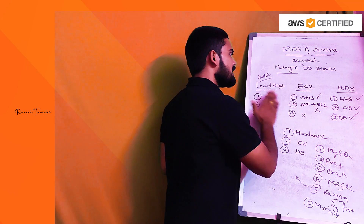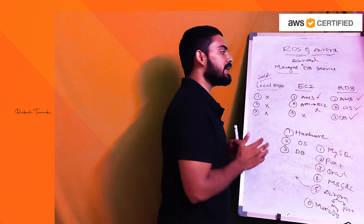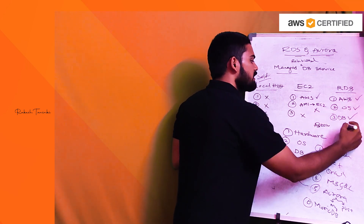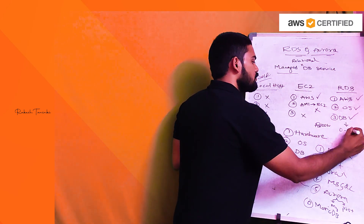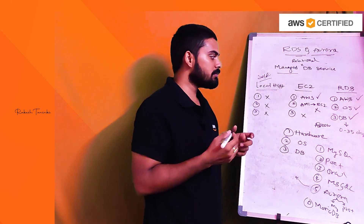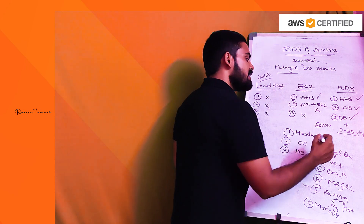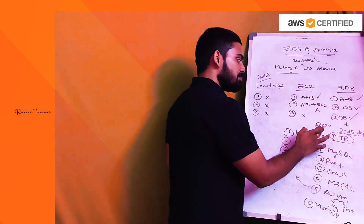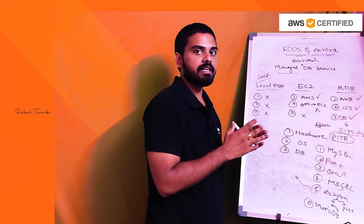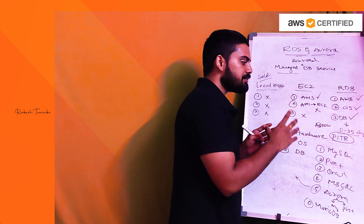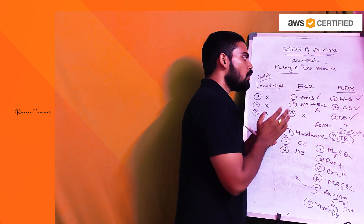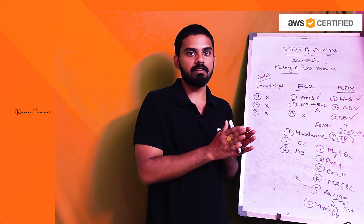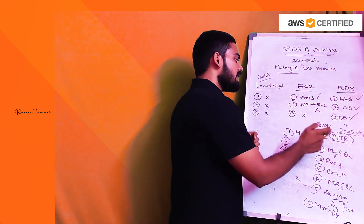Comparing EC2 and RDS, RDS has automated backups. By default, RDS provides 0 to 35 days of backup retention, and based on your requirements you can configure the number of days. This is also called point-in-time recovery. Backups are taken based on a reporting and maintenance window. If you run a query that crashes RDS or alters tables at the DB level, point-in-time recovery helps you restore.